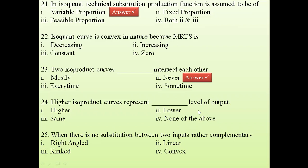Question 24: Higher isoproduct curves represent what level of output? A property of isoquants is that a higher isoproduct curve represents a higher level of output. The more higher the isoproduct curve, the more output it represents. The answer is higher level of output.